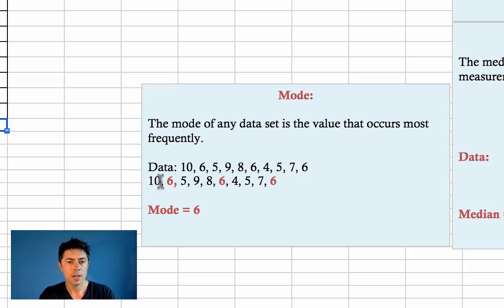Let's take it here. You can highlight the number of values that are occurring most frequently, in this case 6, and hence the mode is 6.